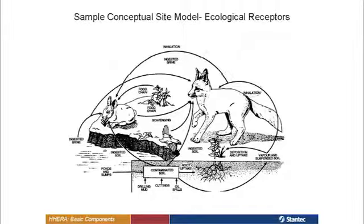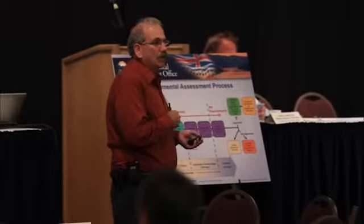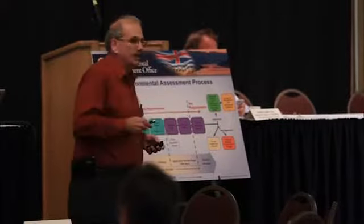Most of what we'll talk about tonight is based on the human health component of the HHERA. The same process is used for the ecological side — you're just looking at different receptors. Rather than looking at humans, you're looking at plants and animals, but the process is the same. The conceptual site model for ecological receptors gives you an idea of how contaminants are going to move through the food chain, so you know how to model them and identify ecological risks in the same way that you identify human health risks.